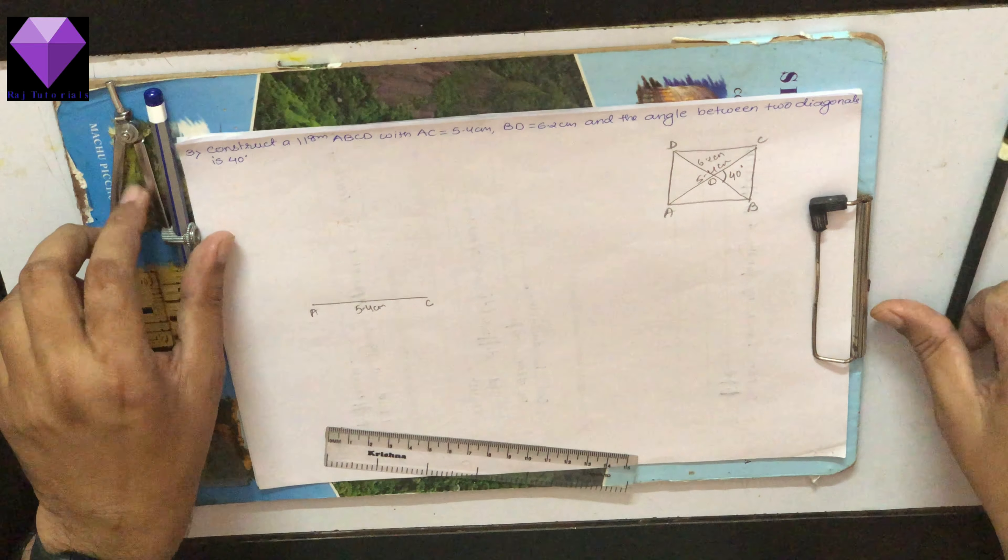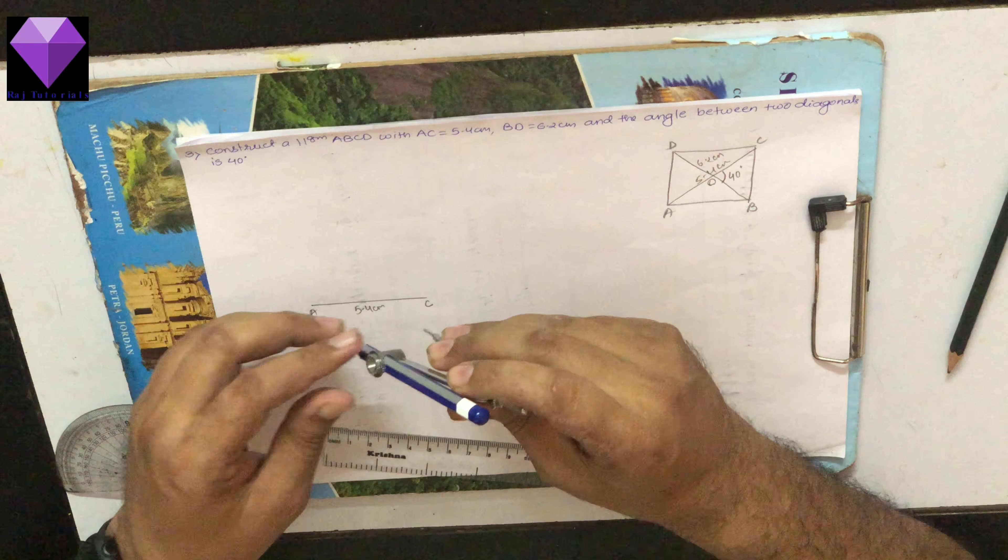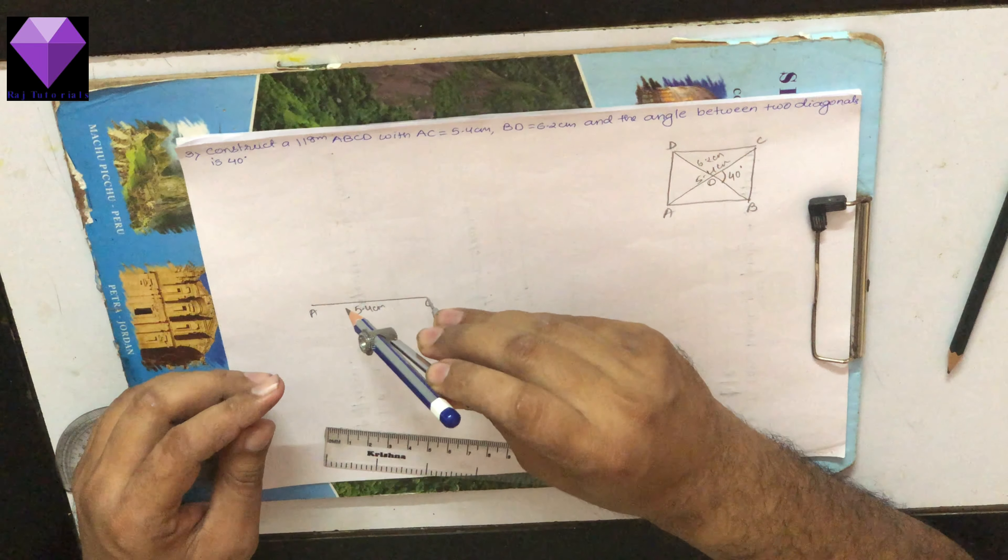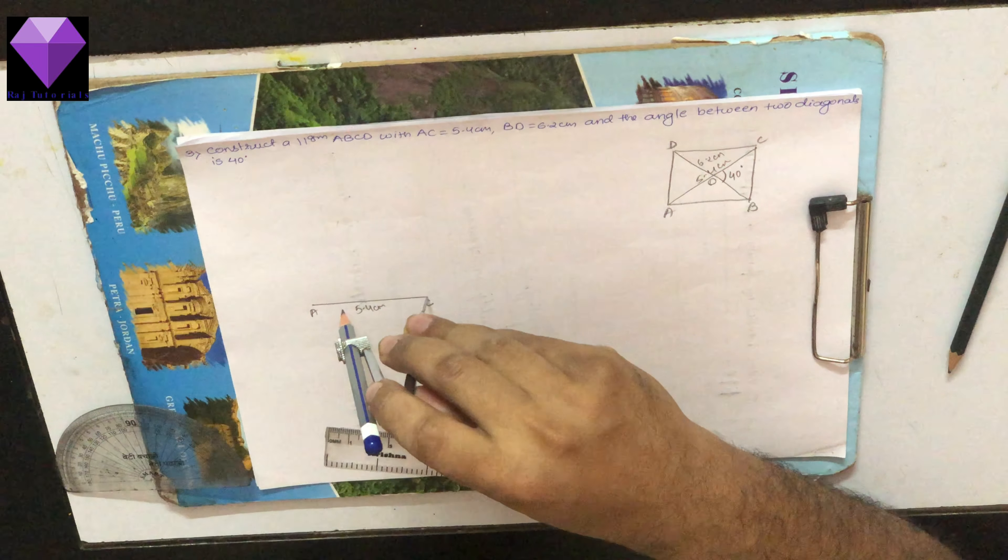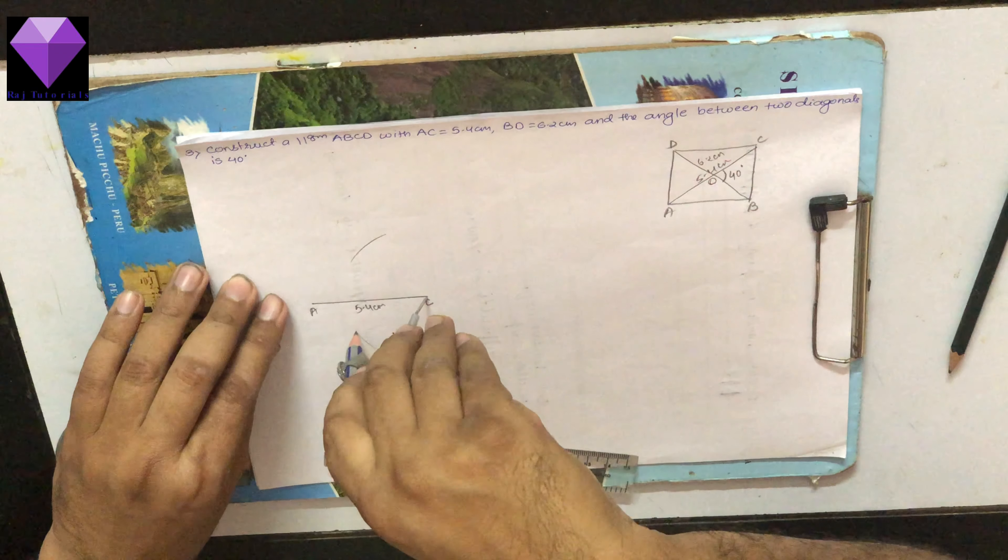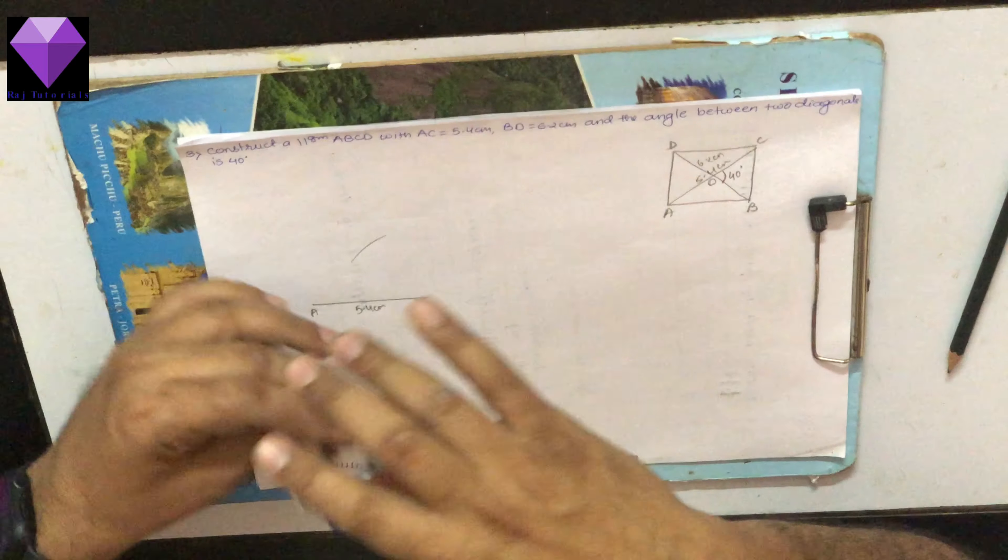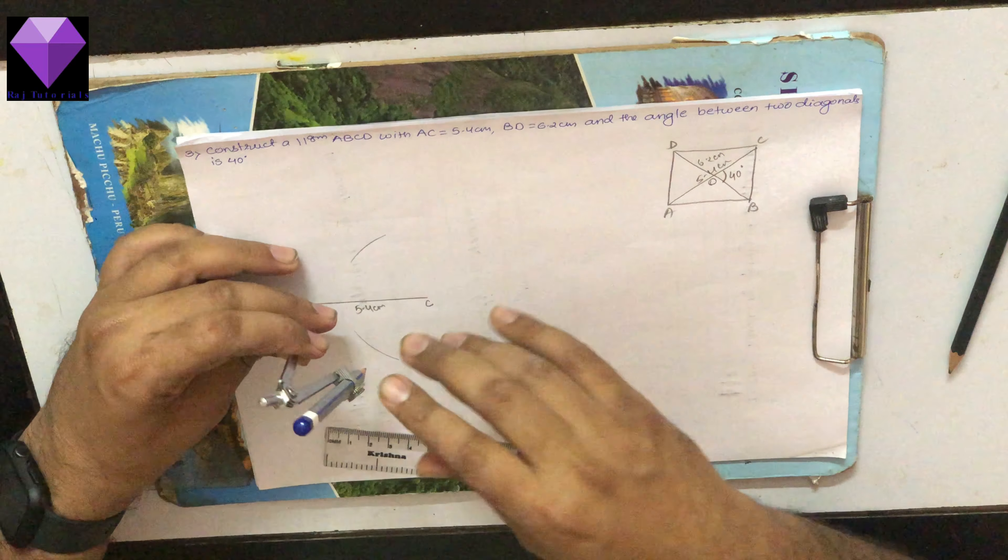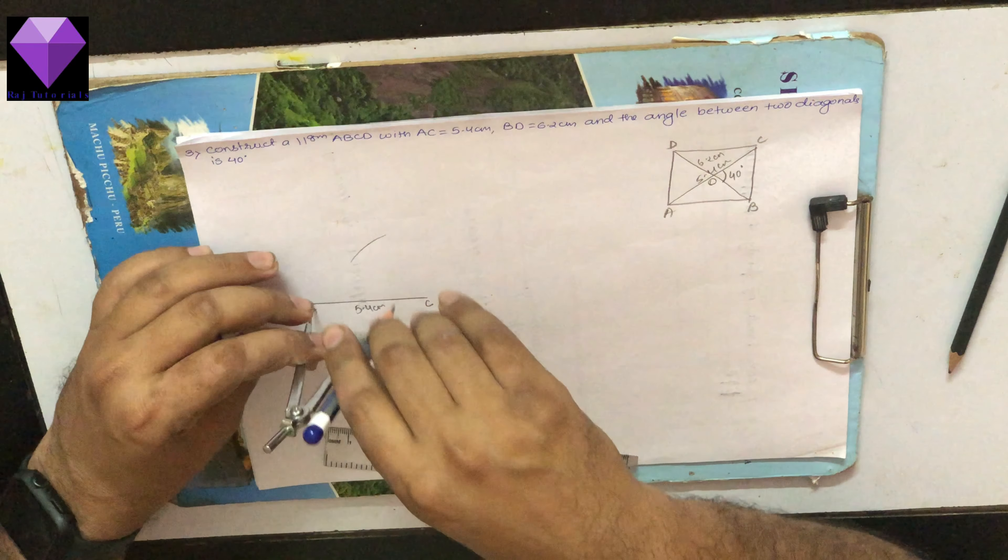Now I will need to make a perpendicular bisector of this line segment. So with more than half radius I will make one arc up, one arc down from C point. Same way I will do one arc up, one arc down from A point.